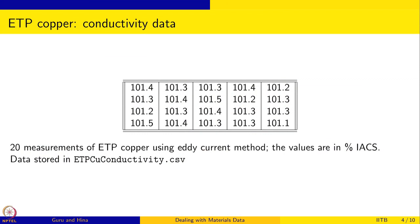That is the data given here — using the eddy current method, reported as percentage IACS. Some 20 different measurements give values like 101.4, 101.3, 101.3, 101.4, and so on. This is the raw data, and this is the most complete reporting of data. We have made 20 measurements and each measurement value is given, typically also in the order in which the measurement was made.